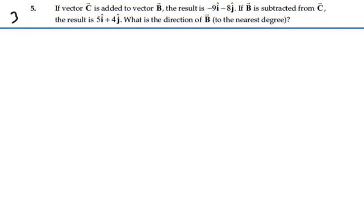Here's problem 3.5. If vector C is added to vector B, the result is -9i - 8j. If B is subtracted from C,